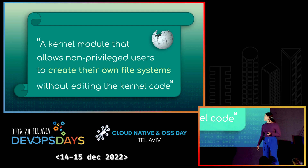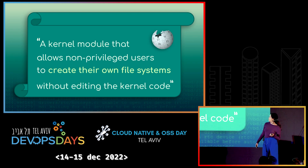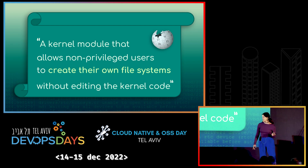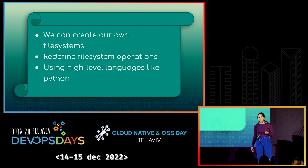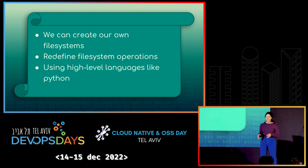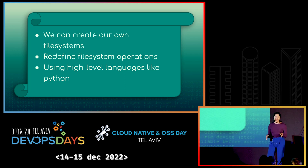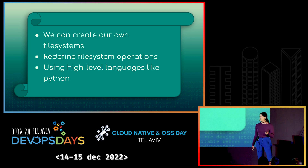So what is Fuse? According to Wikipedia, it's a kernel module that allows non-privileged users to create their own file systems without editing the kernel code. What does it actually mean for us, the users? It means we can create our own file systems. We can modify and redefine operations like reading from a file, writing to a file, or listing directories and add more functionality to them. And what's nice is that we can do this with high-level languages like Python, which is super convenient.